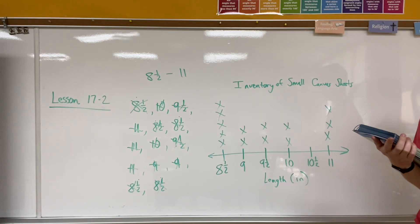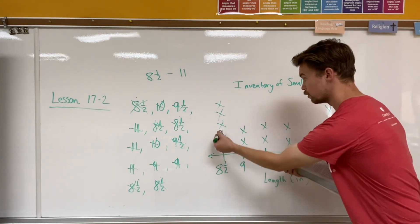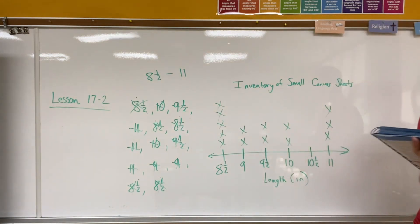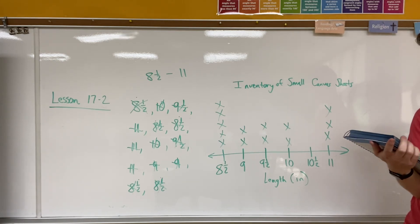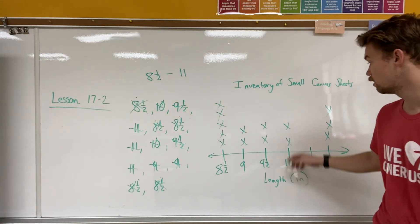The most frequent number is eight and a half. One, two, three, four, five different times. There are three stacks, or there are three sheets that are 11 inches long, since there are three x's above 11, and there are the same number of nine and nine and a half sheets and ten inch sheets of canvas. Each have the same length of two.